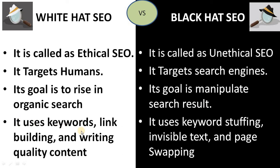White Hat uses keywords, link building, and writing quality content — these are the tactics or strategies used, and they are all advisable. Black Hat uses keyword stuffing, invisible text, and page swapping. Page swapping means they say a page is about one topic — for example, global warming — and after getting the ranking, they change the entire page. When a person clicks on that website, the page is no longer related to global warming but something else entirely. That is what is meant by page swapping.